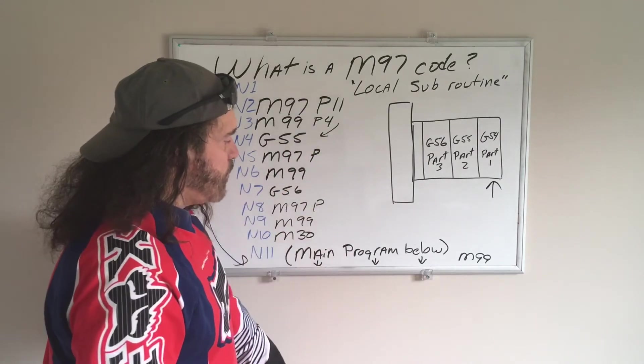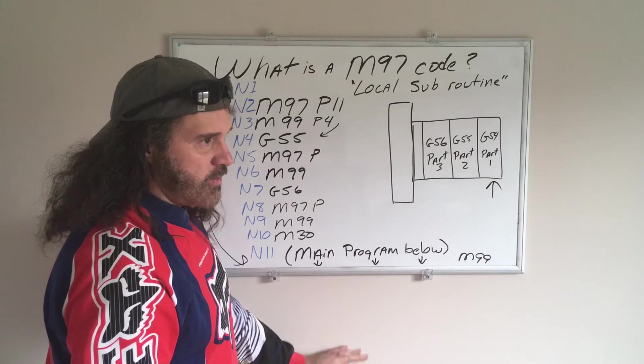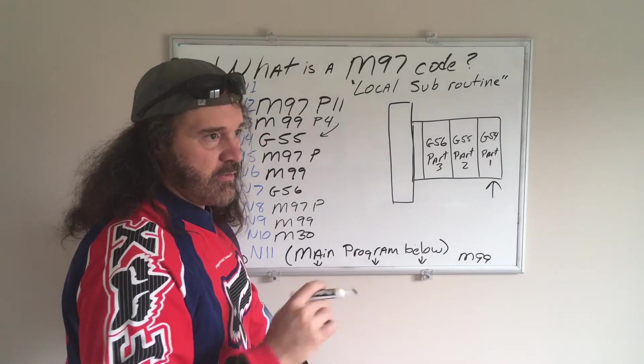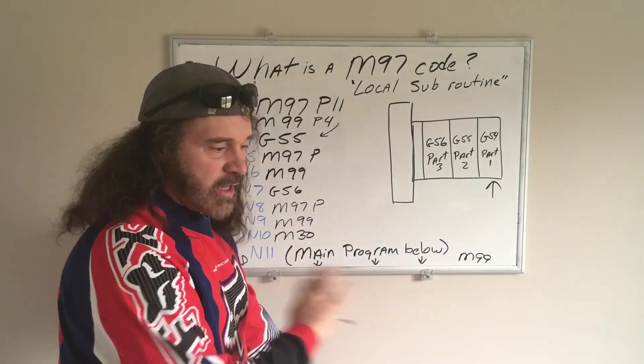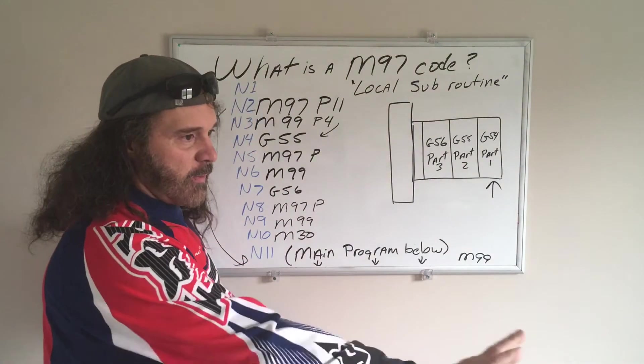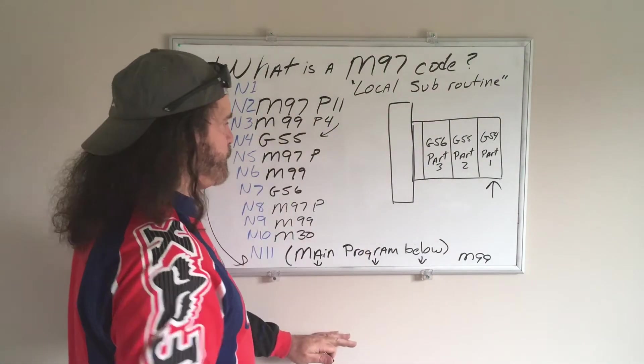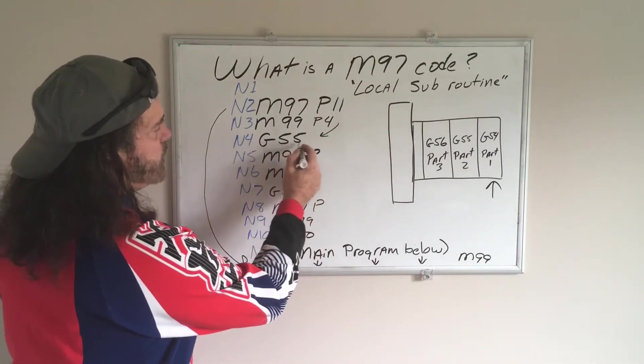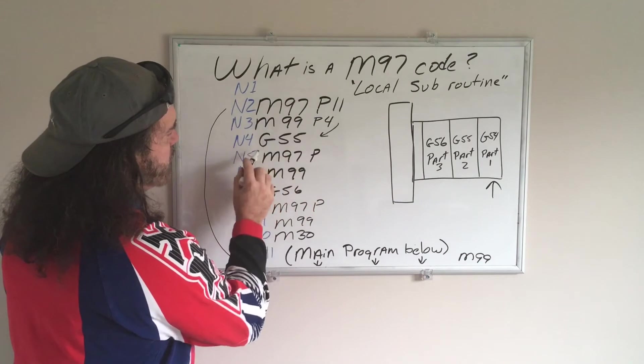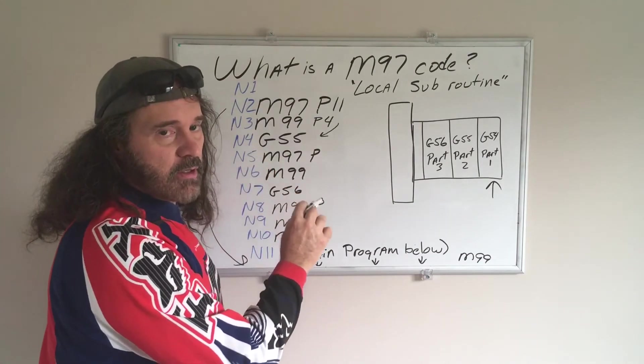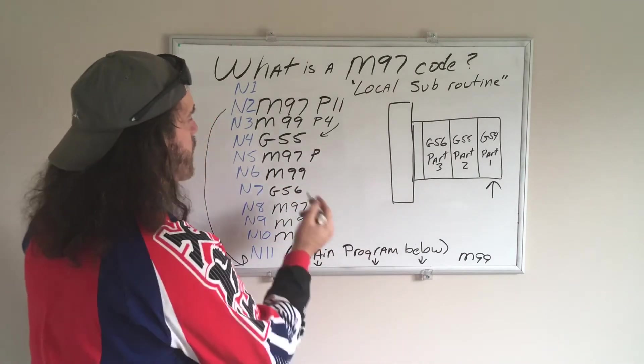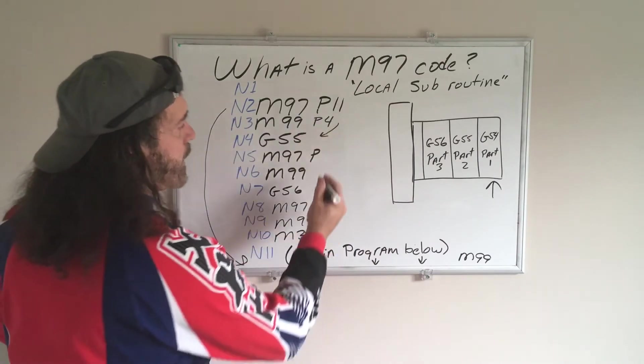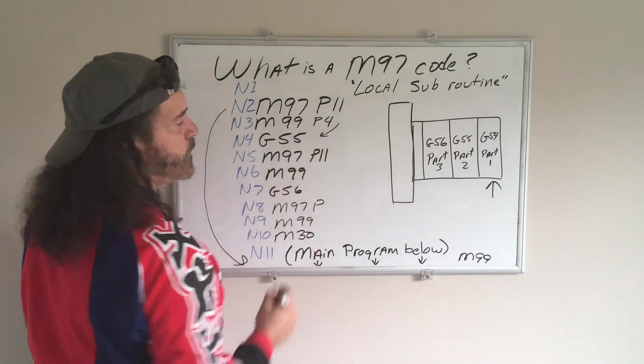Just make sure in all your programs, or I should say, in any of the program below, you don't have any offsets like 54, 55, 56 on any of the lines. Just leave it open. So now we're in G55 mode. Now it's going to jump down to my next M97 subroutine call. And we already know I want to jump back down to line 11, so P11.